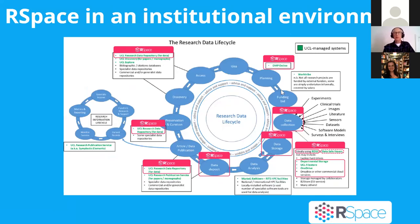Our customers are institutions — universities. This diagram is from University College London and shows their notion of the research data lifecycle, which we're all familiar with. You can see the various places we're interfacing in an actual university environment with the various tools and resources used in research. In their case, DMP Online for planning, RSpace comes in at data collection, we integrate with their data storage capabilities, and then data deposit into repositories like Figshare. This is intended to be something an institution could deploy to enhance its research data lifecycle.